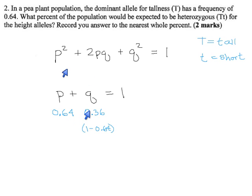And now that we have these we can calculate whatever they want. We could find all three of these terms and get the double dominant which would be big T big T, and the heteroze big T little t, and the homozygous recessive little t little t. But it turns out all they want is what percent of the population would be heterozygous, meaning they only care about this term, 2pq.